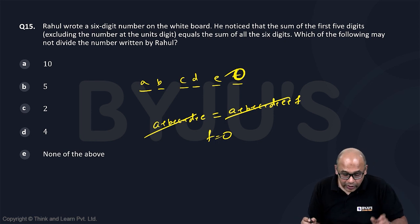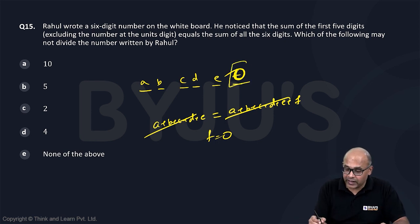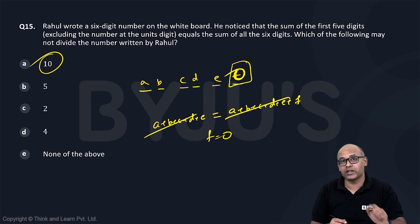Which of the following may not divide the number written by Rahul. So you can see a number ending with zero is always divisible by 10. So that is not your answer.